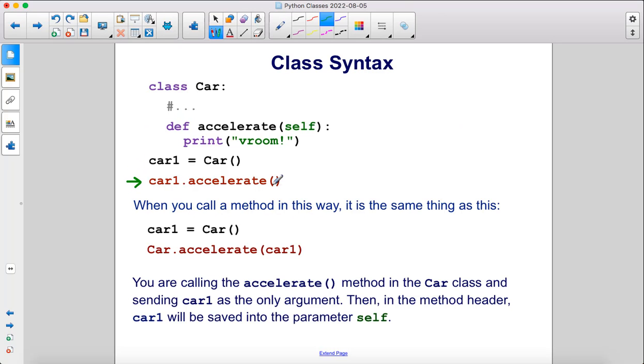Calling the method this way is just a shortcut for this. So these two lines are equivalent. This is the same thing as calling the accelerate method from the car class and sending the object as the argument, which is going to get saved into this self parameter.